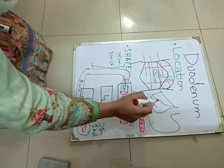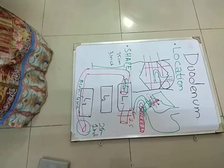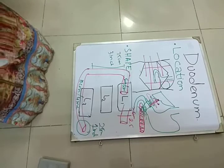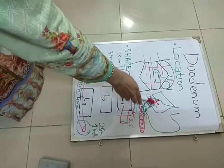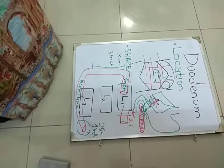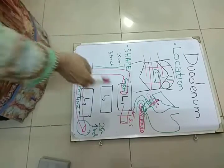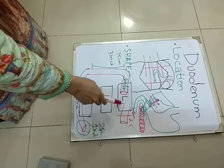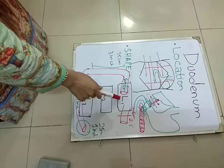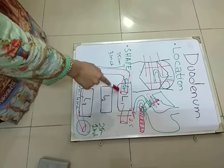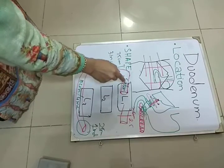In the hepatoduodenal ligament, we have the epiploic foramen, also known as the foramen of Winslow. I will return to this point when discussing the relations of the first part of the duodenum. The first part of the duodenum is located at the first lumbar vertebral level, and it moves upward and backwards.